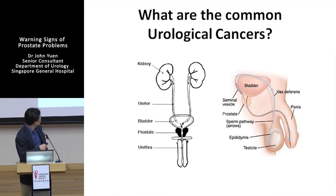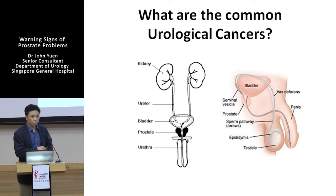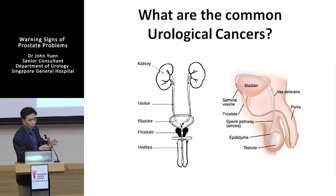If you look at this, this is a urinary system, starting from the kidney. This is a urine passage, this is a bladder. The bladder is to store your urine, and the prostate is just under the bladder, just beneath the bladder. It's guarding the door, the opening of the bladder.